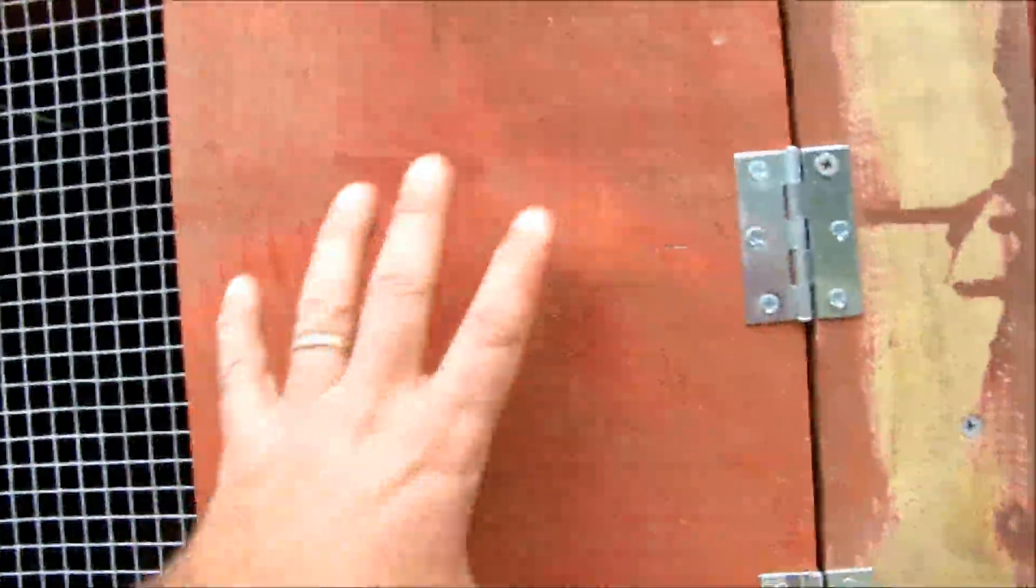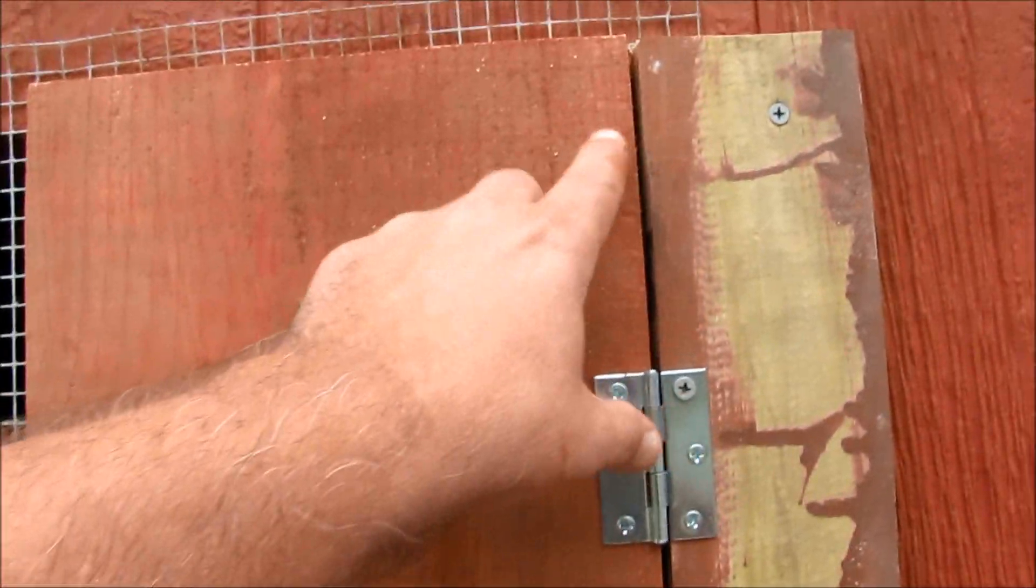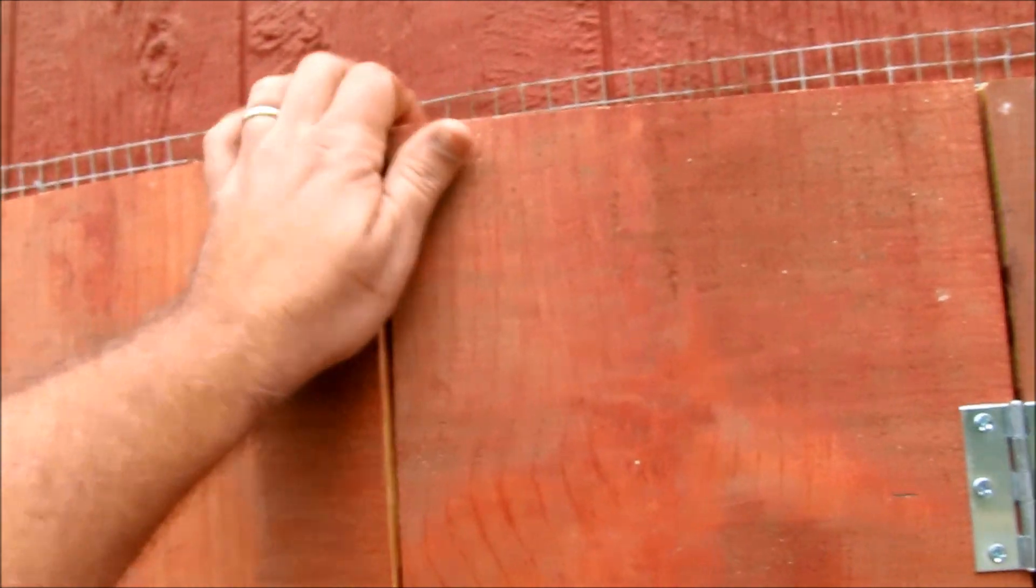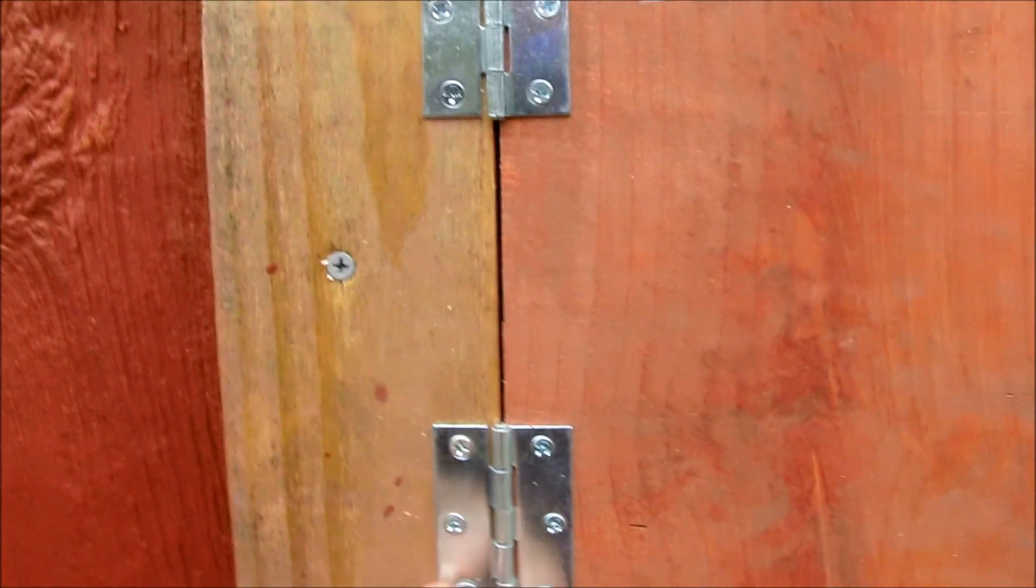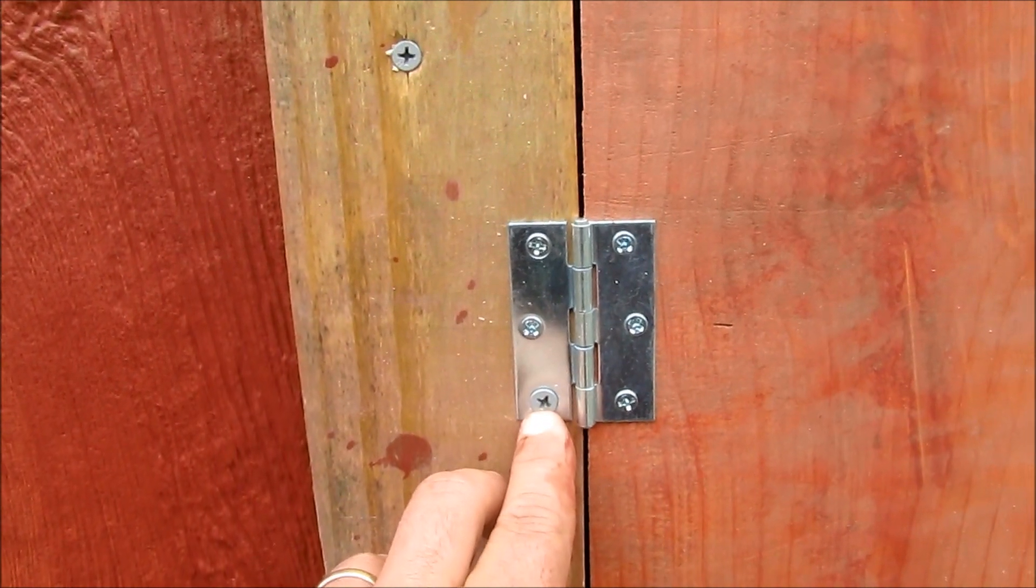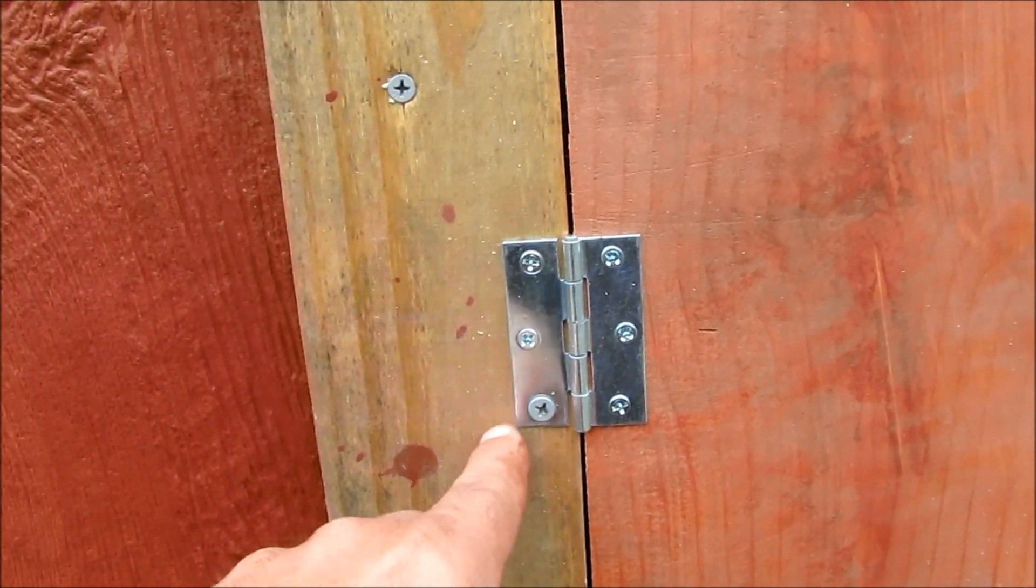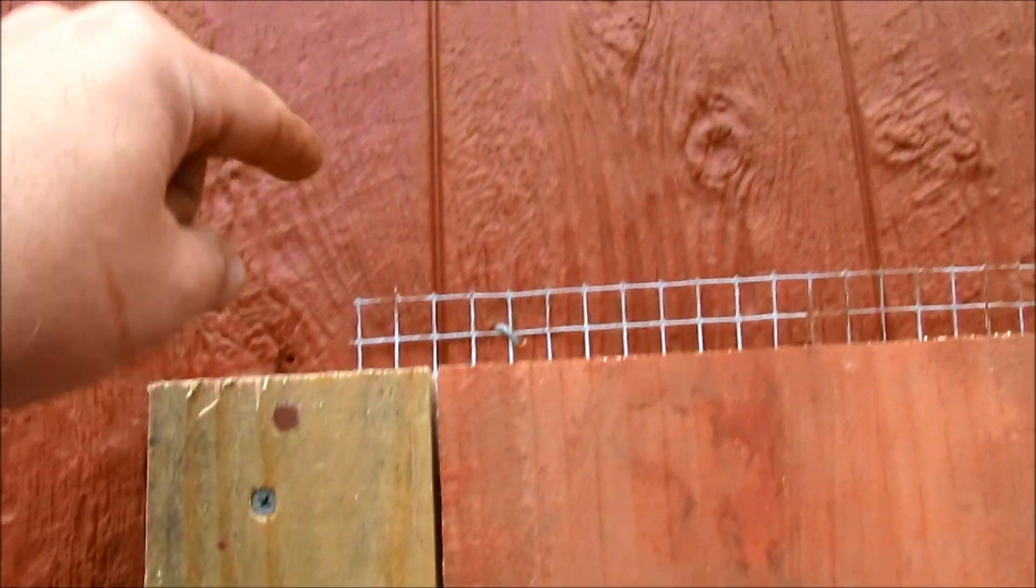For 24 inch center studs, you're going to need a one by ten here. This is nine and a half inches, nine and three quarter from here to here. Then you put your hinges on here. It's a three inch long screw, two and a half inch long screw, goes through the hinge, through the one by four, through the wall board, into the stud.